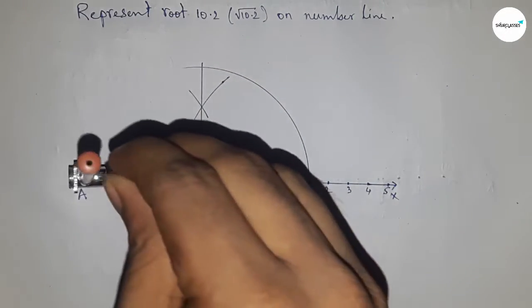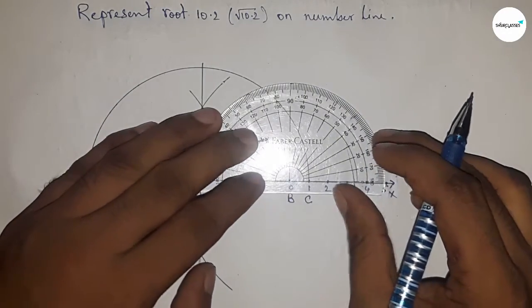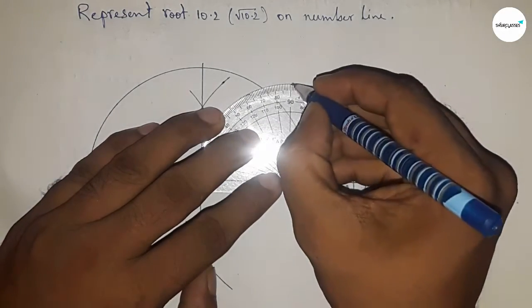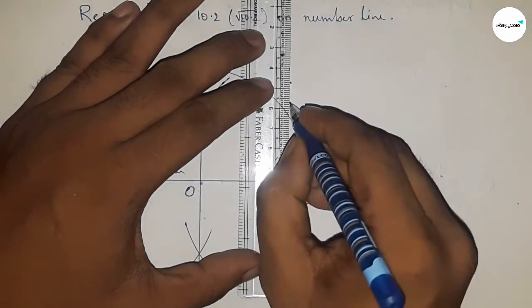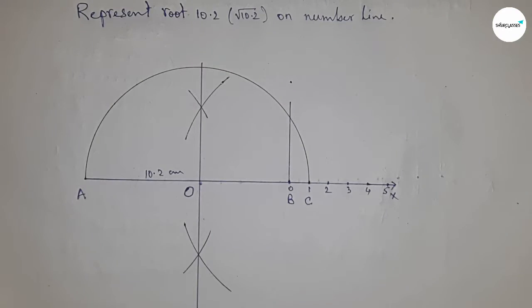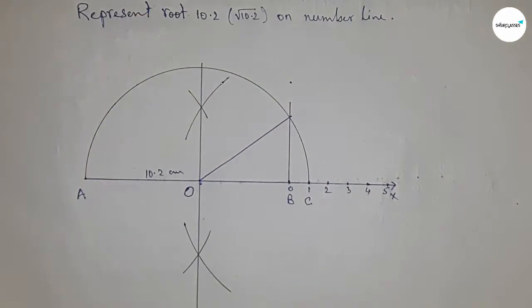Draw a 90-degree angle on point B using a protractor. Now join this at the point where it meets at point D.